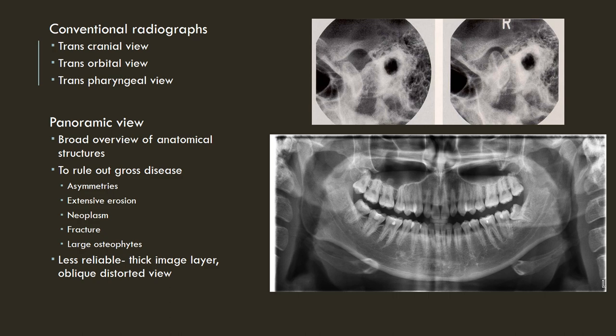Conventional radiographs such as the transcranial, transorbital, and transpharyngeal views are now obsolete. Panoramic view is primarily used to get a broad overview of anatomical structures of the TMJ and can help rule out gross disease like asymmetries, extensive erosion, neoplasm, fracture, or large osteophytes. Minor details are difficult to delineate on panoramic view, and it may be less reliable for a TMJ diagnosis specifically, because it has thicker image layers and an oblique distorted view of the TMJ.